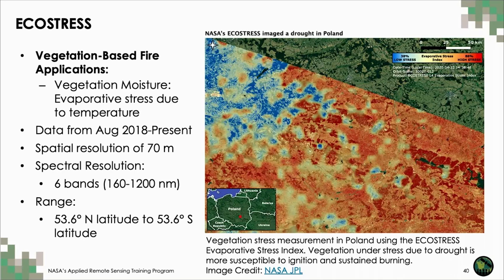ECOSTRESS is a newer satellite instrument on board the ISS — the Ecosystem Spaceborne Thermal Radiometer Experiment on Space Station. It measures temperature to better understand water stress and vegetation moisture dynamics. With data starting in August 2018, ECOSTRESS provides vegetation stress information at a spatial resolution of 70 meters in areas around the globe. An example shown here is an evaporative stress index assessment completed for Poland — high vegetation stress areas are visible in red over the majority of the study area, while low stress is predominantly located in the northwest portion. This illustrates the utility of ESI mapping as a way to estimate vegetation stress and fuel moisture.